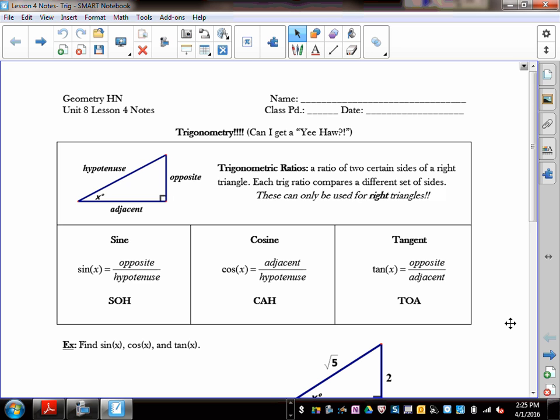So trigonometric ratios. Remember a ratio is a comparison of two values. So trigonometric ratio is a ratio of two particular sides of a triangle. What we're learning today are three trig ratios: sine, cosine, and tangent. And each of these compare two sides of a triangle. You notice the sine compares the opposite side to the hypotenuse. Cosine compares the adjacent side to the hypotenuse. And tangent combines that and compares the opposite to the adjacent. So notice these are actually all three combinations of two of the three sides.